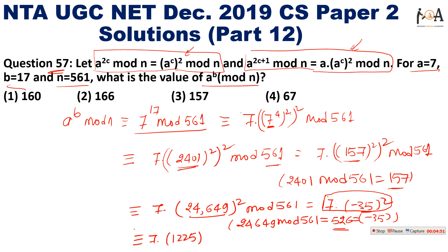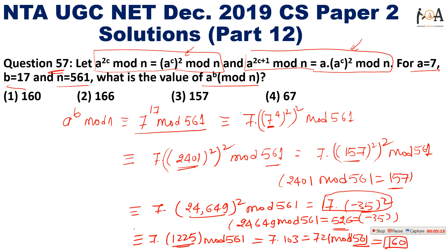I just expand (−35)^2 = 1225. Then 1225 mod 561 = 103, so the expression becomes 7 · 103 = 721 mod 561. Further solving, 721 − 561 = 160. So 160 is the correct answer. Option 1 is the right answer.